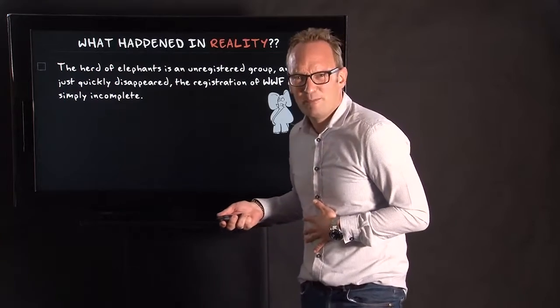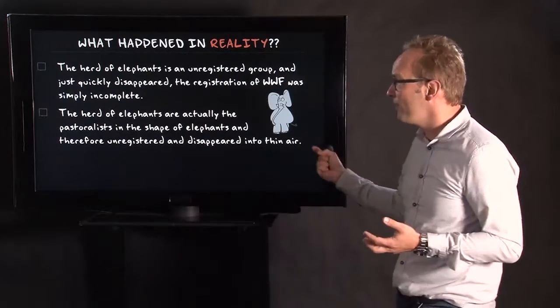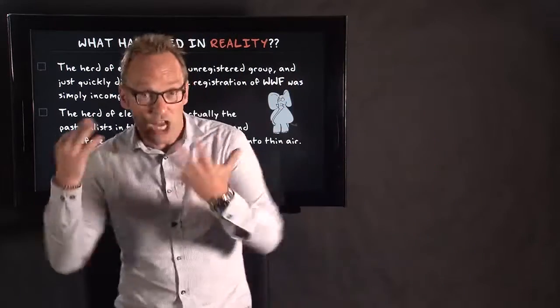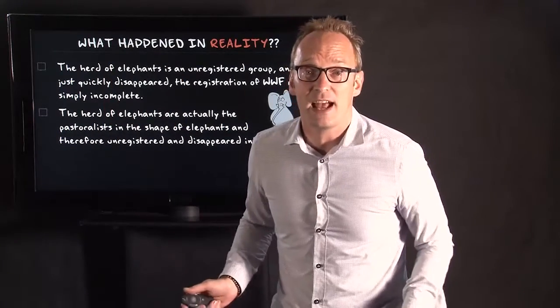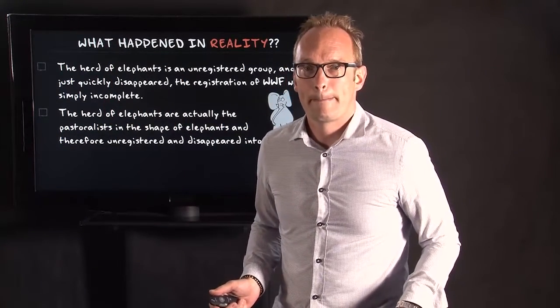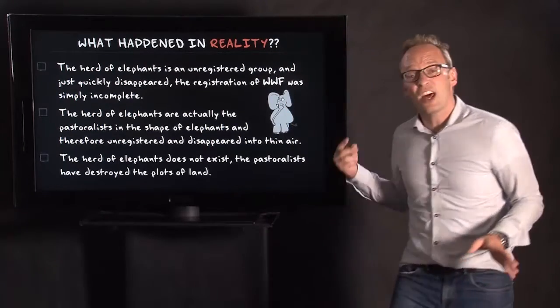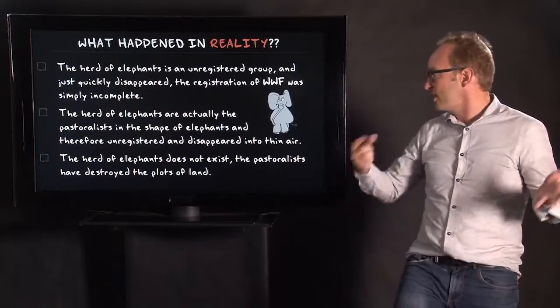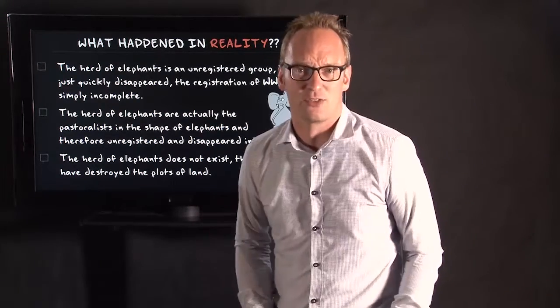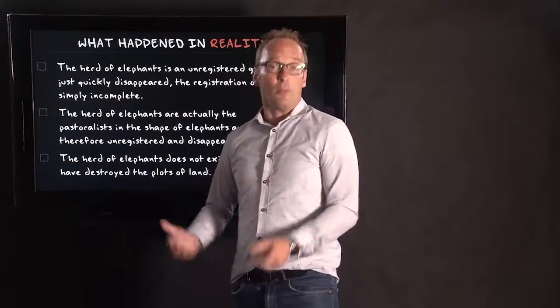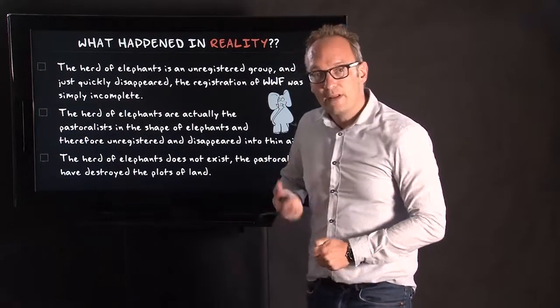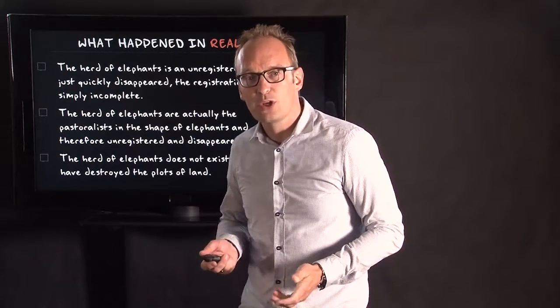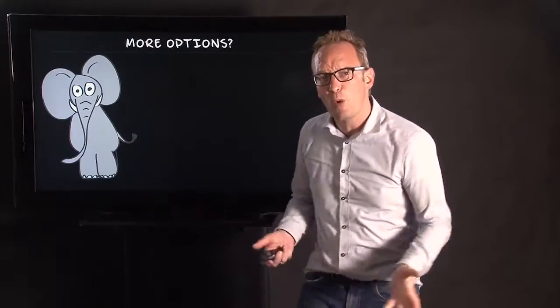But maybe this happened in reality. The herd of elephants are actually the pastoralists in the shape of elephants, so transformed and therefore unregistered and they disappeared in thin air. It's different. But there's also another possibility. The herd of elephants does not exist. The pastoralists have destroyed the plots of land. So there were no elephants at all. It was just the pastoralists acted as elephants, not in the shape of elephants, but acted as elephants and then destroyed the land. That's also a possibility.